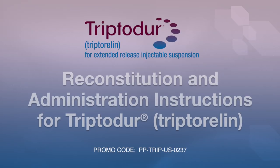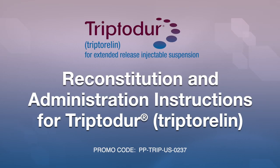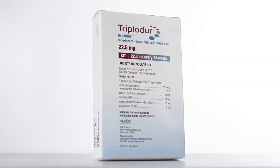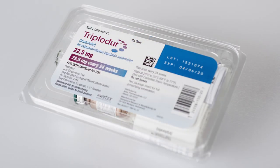Welcome. In this video, we will review detailed steps for mixing and administering a Tryptidor triptorelin injection. Tryptidor is a gonadotropin-releasing hormone (GnRH) agonist indicated for the treatment of pediatric patients two years of age and older with central precocious puberty.